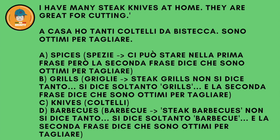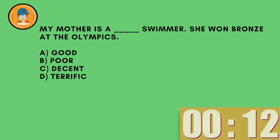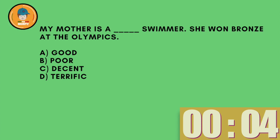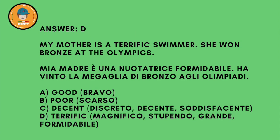My mother is a mmm swimmer. She won bronze at the Olympics. A: good. B: poor. C: decent. D: terrific. And the answer is D — terrific — because she's not just good, she's very, very good, which is what terrific means — formidable, terrific.